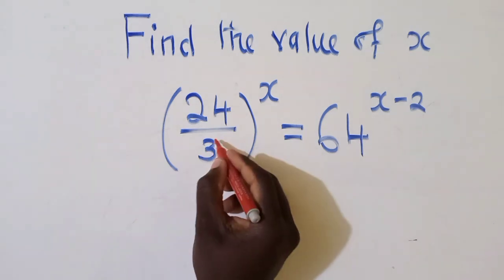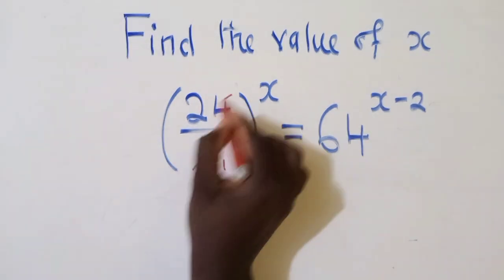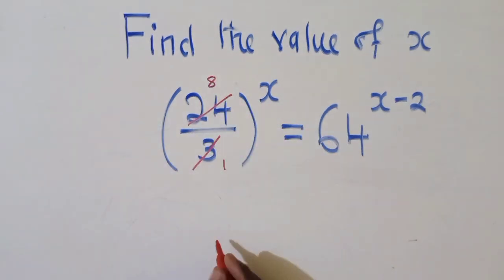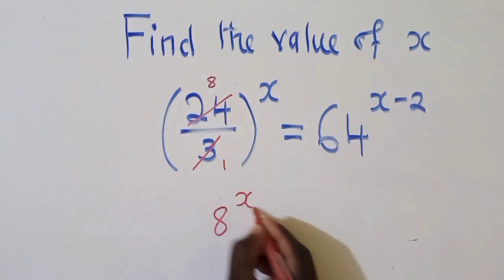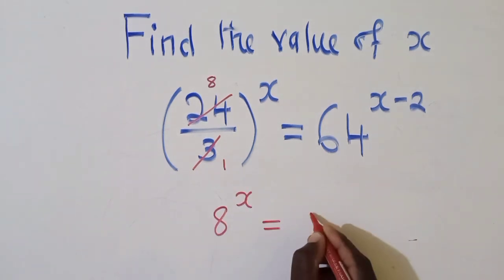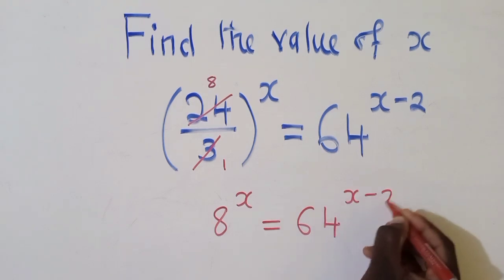So we shall say 3 into 3, that's giving us 1, into 24, it's giving us 8. So that means we shall have 8 power x, which is equal to 64 power x minus 2.